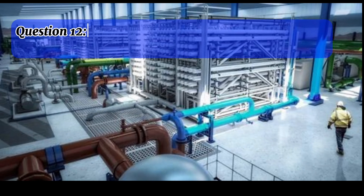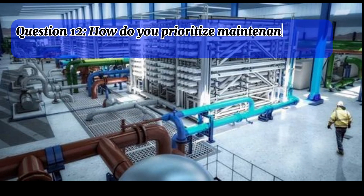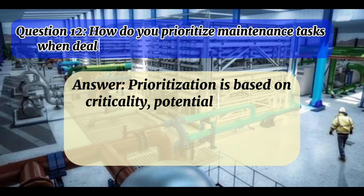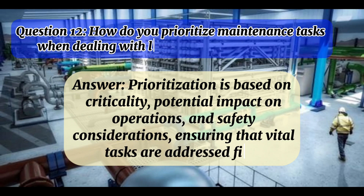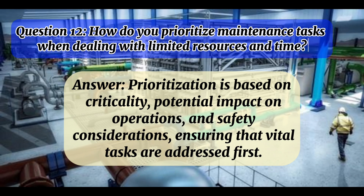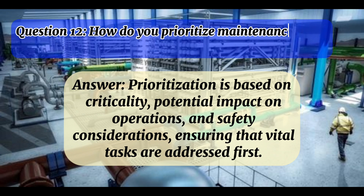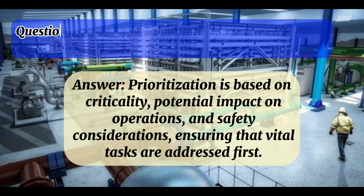Question 12: How do you prioritize maintenance tasks when dealing with limited resources and time? Answer: Prioritization is based on criticality, potential impact on operations, and safety considerations, ensuring that vital tasks are addressed first.